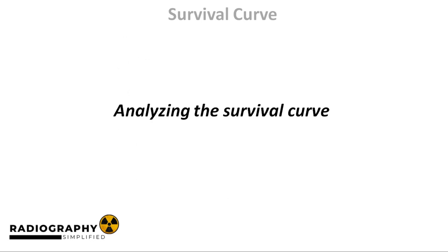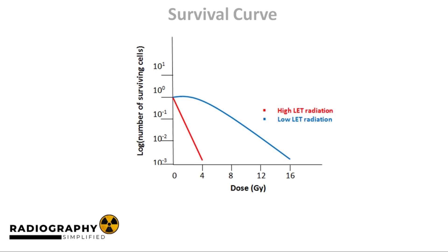Now let's analyze the individual survival curves. You may want to check out our video on distribution of dose earlier in this series if you're not familiar with linear energy transfer. The shape of the survival curve depends on the type of radiation involved. For low LET radiation, the curve changes very little at low doses, but at higher doses we start to see a linear decline. At low doses of low LET radiation, the cell is able to repair the damage caused by the radiation, which is why we don't see a major reduction in surviving cells. The portion of the curve that changes very little is called the shoulder of the curve.